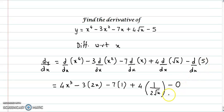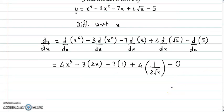Simplifying, we get 4x³ - 3(2x) - 7(1) + 4/(2√x) - 0, which equals 4x³ - 6x - 7 + 2/√x. So this is the value of dy/dx.